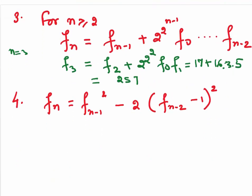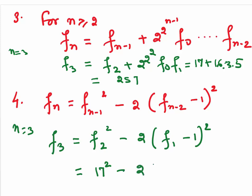Now, look at the last one. Again, if I take n to be 3, our F3 can be found using the previous values, F of 2 whole square minus 2 times F1 minus 1 whole square. Substitute F2 you know is 17 square minus 2 times F1 we know is 5 minus 1 whole square. Simplify. 289 minus 2 into 4 square. You will get 257.